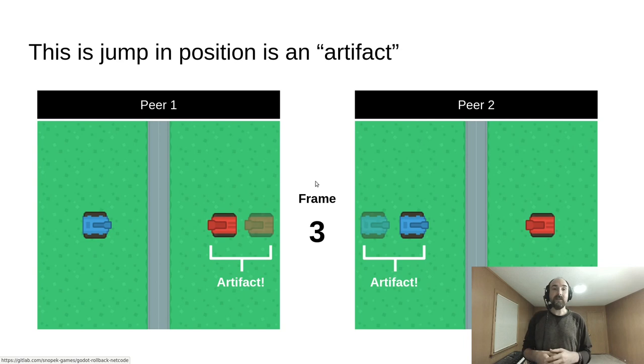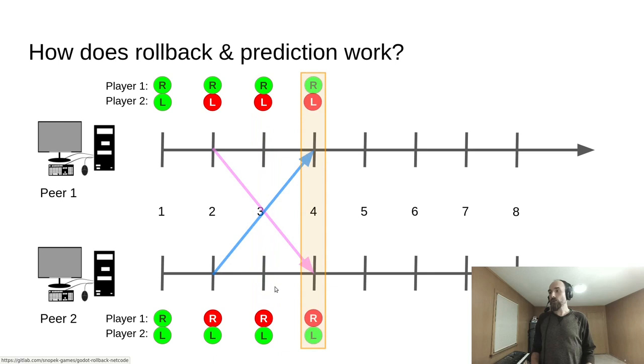On frame 3, when the real input from the other player finally arrives, they see their opponent tank jump forward as if they had been pressing for three frames. This jump in position is an artifact. An artifact is something that wouldn't happen in offline play. It's the result of online play, something that breaks the illusion. All network synchronization has some artifacts, but there are techniques to minimize and hide them.